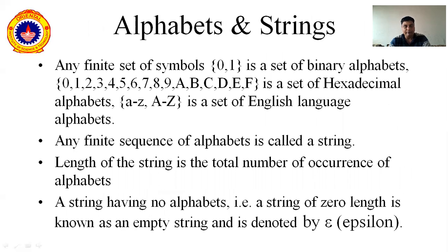Now I am talking about alphabets. What are alphabets? Alphabets are nothing but the set of characters, symbols, and digits — like 0, 1, 2, 3 up to 9, then A, B, C, D up to Z, and small a to z. These are our alphabets. Any combination of these alphabets will form a string.